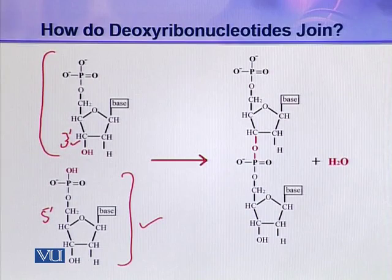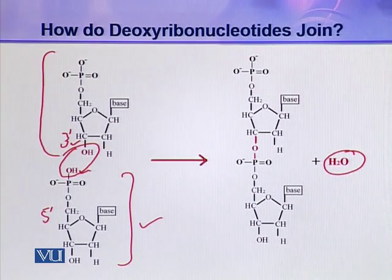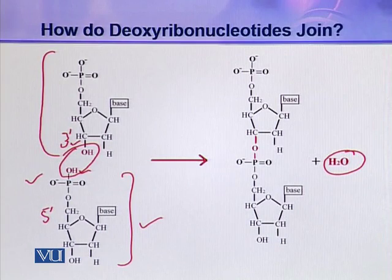Similarly, another hydroxyl group is present on this phosphoric acid. These two hydroxyl groups combine together, a water molecule is eliminated, and an ester linkage is established. This is an ester linkage because this is an organic acid and this is an alcoholic group — when an organic acid and an alcoholic group react, they form an ester linkage.